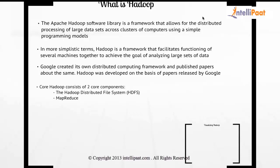There's an interesting story: when Doug Cutting completed the development of Hadoop, he wasn't really sure what name to give it. His baby had a yellow color elephant toy, and the baby would call that elephant 'Hadoop' — and that's how the name came about. The name has no meaning; it was short, sweet, and Doug Cutting liked it. There is typically no meaning to what Hadoop is — it's what his baby used to call his elephant.